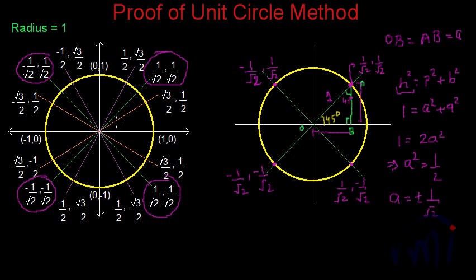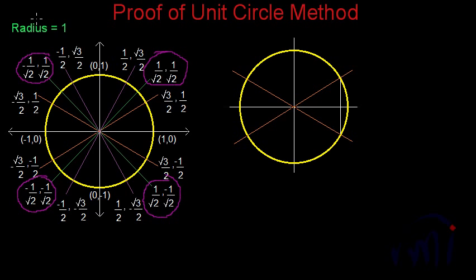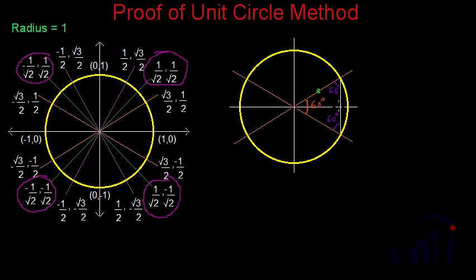Now let's talk about 30 degrees. Here we have a unit circle and I have drawn two lines in orange where this angle is 30 degrees and this is also 30 degrees, making the total angle 60 degrees. Looking at this triangle properly, this side equals this side — both are the radius of the unit circle. That means these two base angles are also equal, and they equal (180 − 60)/2 = 60 degrees. So all three angles are 60 degrees and all sides are equal to the radius, which is 1.